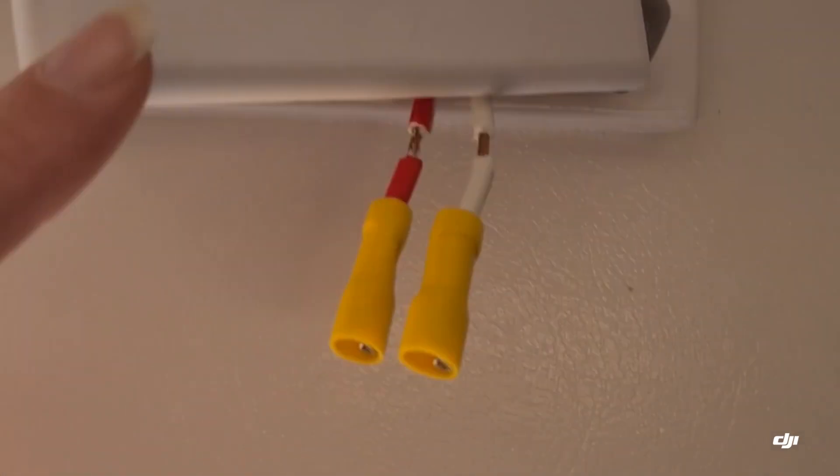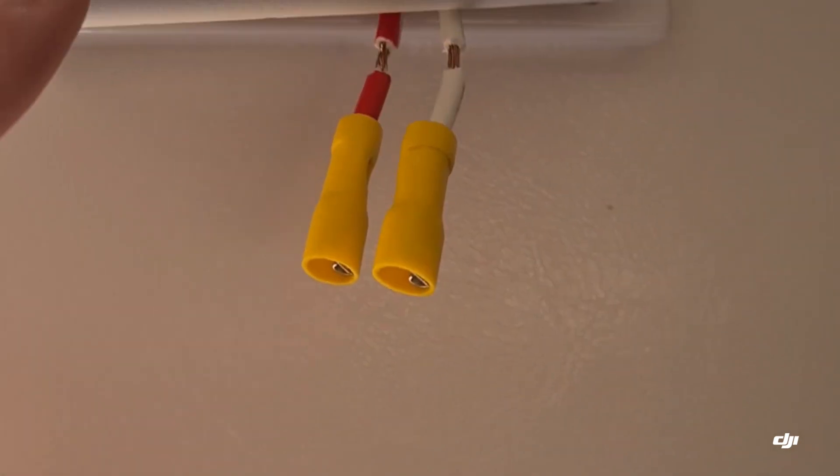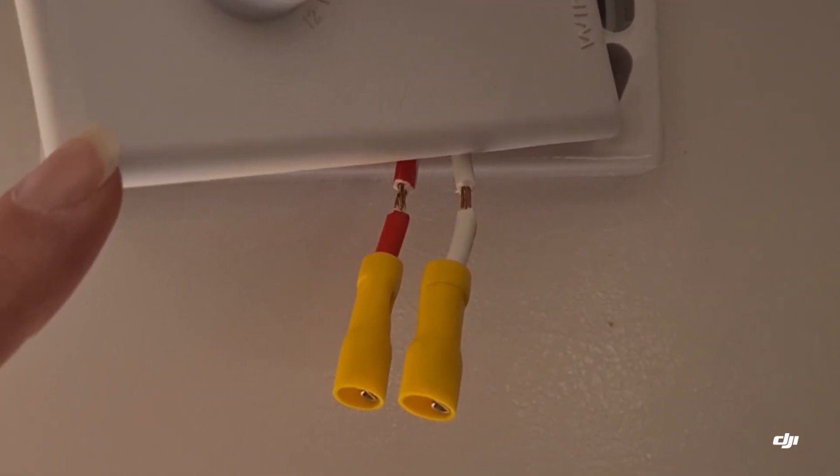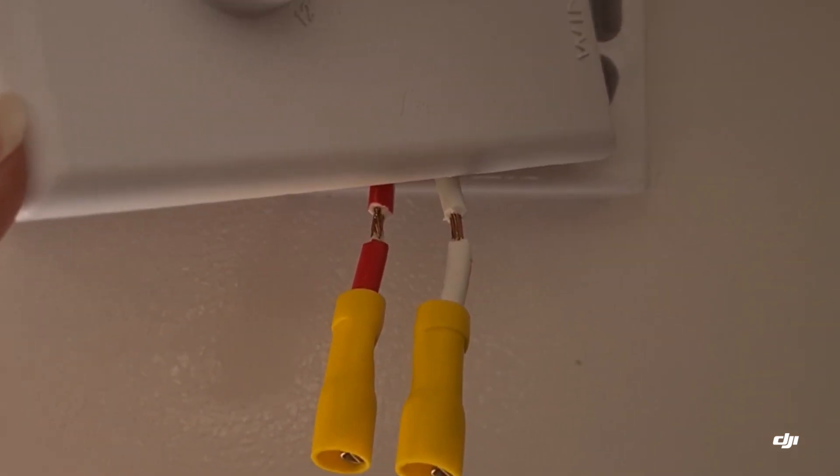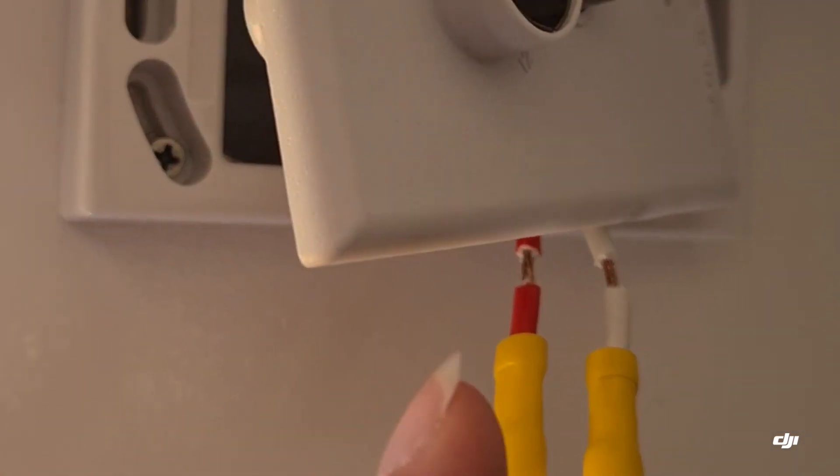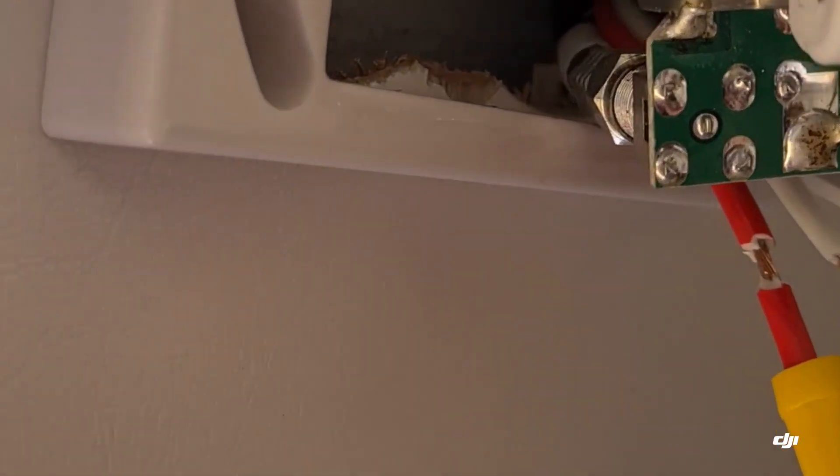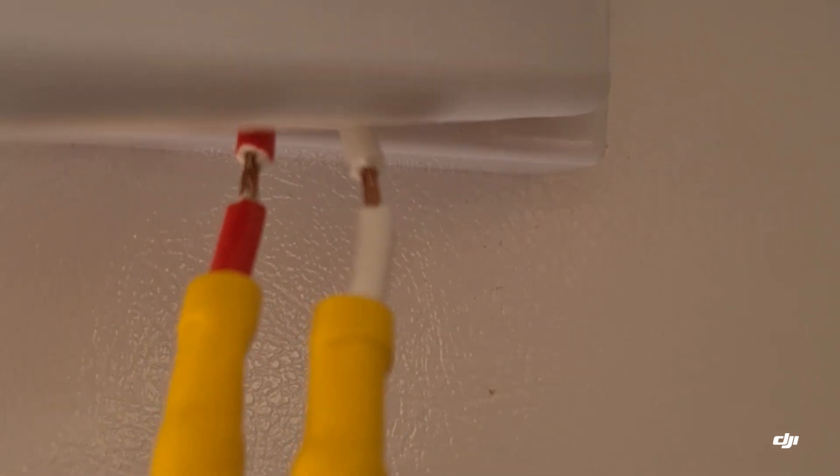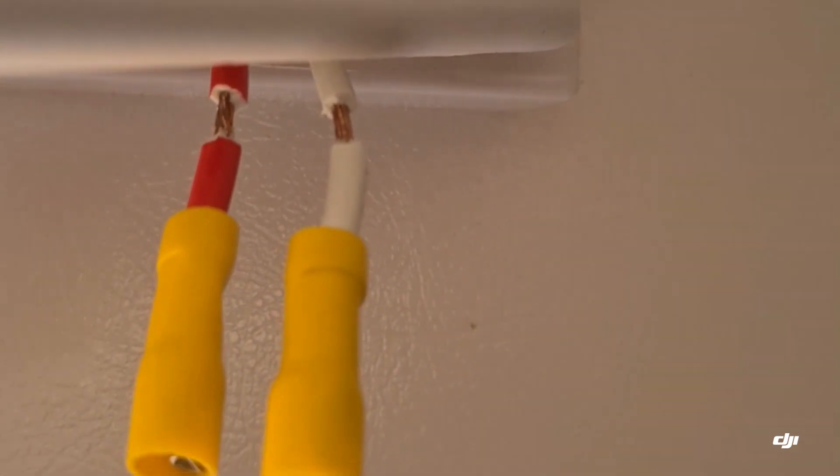This is the 12 volt plug that your TV goes into. We didn't want to put another plug on the Sirocco fan because we want to be able to run our fan and our TV at the same time. So what Nathan has done is he's actually gone to the back here and pulled the two wires out and he is going to be connecting it up to those two wires.